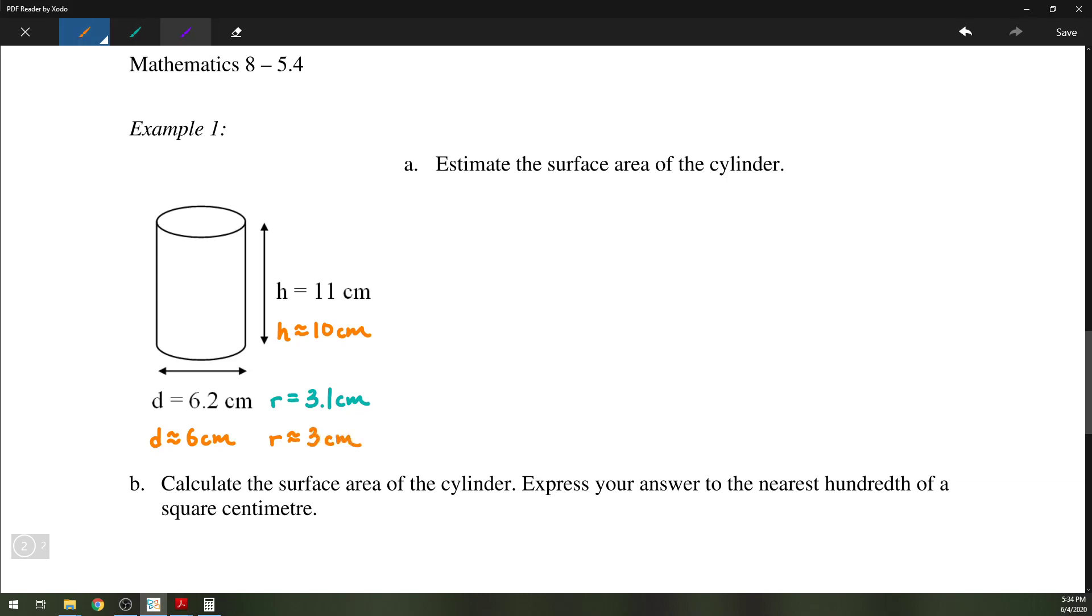So we're going to write that into our formula. So surface area equals 2 pi R squared plus 2 pi R H. Substitute in the radius of 3 and the height of 10.